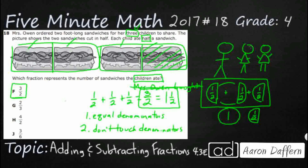If we want to know how much Mrs. Owen bought, that's the tricky part. That would be four halves — that's what's represented by the two whole sandwiches she ordered. But the answer we need is three halves, which is what the children actually ate.